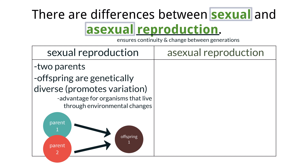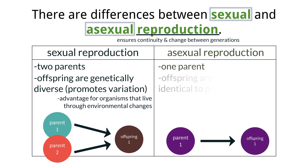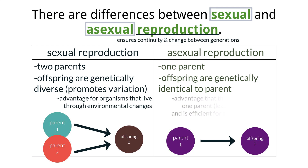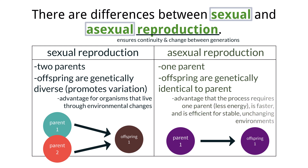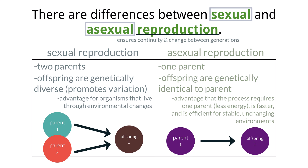Asexual reproduction requires only one parent, and all offspring are genetically identical to that parent. The advantage to this method is that it requires only one parent, so energy is not expended to find a mate. Asexual reproduction is usually faster and can create organisms to colonize a new area quickly. It produces offspring with little genetic variation, which is very efficient in an environment that is relatively unchanging.